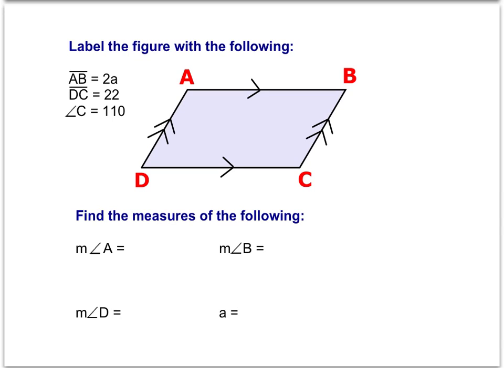This problem asks us to find some missing measures of angles and a variable, given information about some sides and measures of angles of the parallelogram. Whenever approaching these kinds of problems, the best thing to do is start by taking this given information and placing it on our illustration to get a visual.